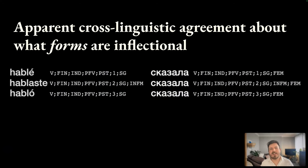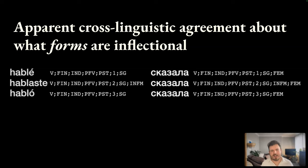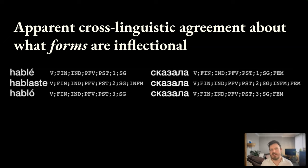There is apparent cross-linguistic agreement about what forms are inflectional and which are derivational. One way we can see this is through the creation of datasets such as Unimorph, which uses a universal set of features to describe inflections across over 180 languages and derivations in 30 languages. This shows a high degree of consistency of which features are involved in inflectional constructions. Here we see constructions in Spanish and constructions in Russian being labeled using the same set of features.